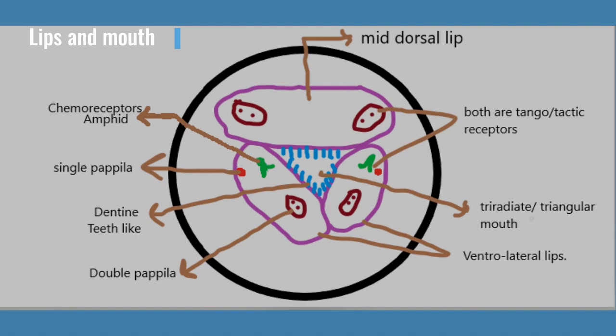You will see some receptors on these lips. The two dots are called tangotactic receptors, and the one in green color is a chemoreceptor called Amphid. There are also single papillas and double papillas. The tangotactic receptors are double papillas — tangotactic means touch. So lips and mouth are finished.